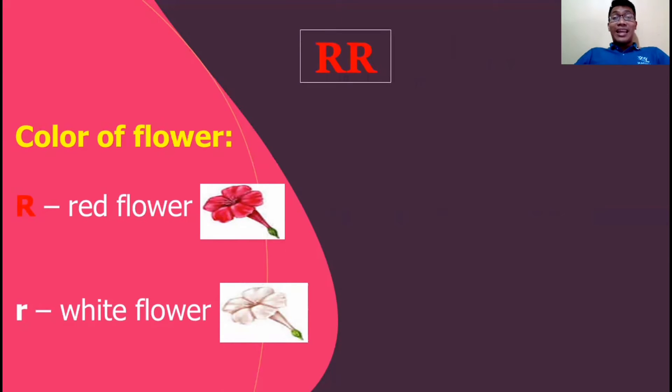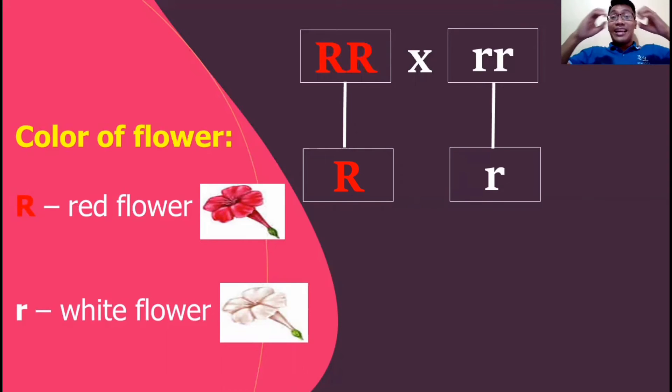The red flower will be represented as two capital R, and this is what we mean by pure line. It means that it is composed of homozygous combination of genes or allele, while the white is represented by two small r. Following the law of segregation, we know that this two capital R and this two small r will be segregated in two, but for easier analysis we will just simplify it representing as single R, single R and small r.